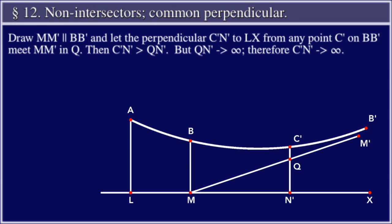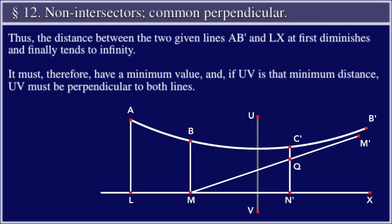Thus, the distance between the two lines AB' and LX at first diminishes and finally tends to infinity. It must therefore have a minimum value, and if UV is that minimum distance, UV must be perpendicular to both lines.